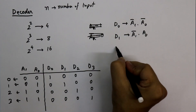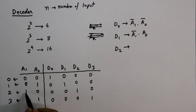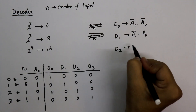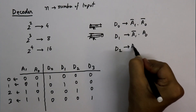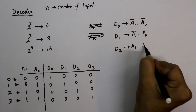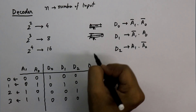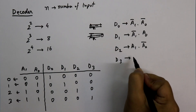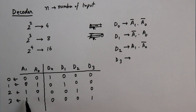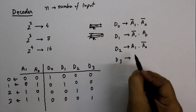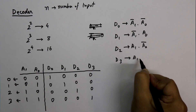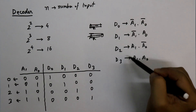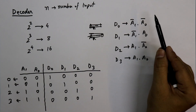For D2 the equation is A1 dot A0 complement, and for D3 both inputs are 1, so the equation is A1 dot A0. Now with the help of these equations we will make our circuit.